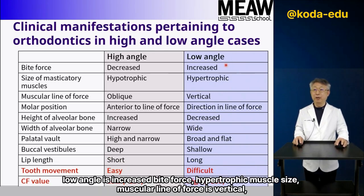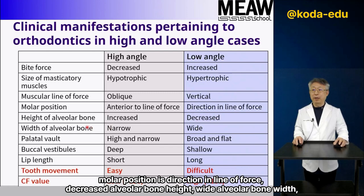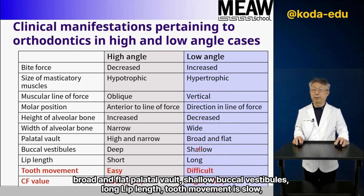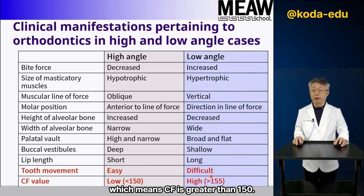Low angle is characterized by increased bite force, hypertrophic muscle size, and muscular line of force is vertical. Molar position is in the direction of line of force, decreased alveolar bone height, wide alveolar bone width, broad and flat palate or vault, shallow buccal vestibules, long lip length, and slow tooth movement, which means CF is greater than 150.